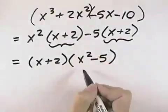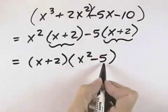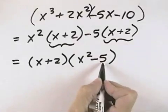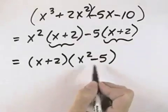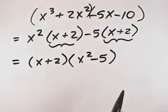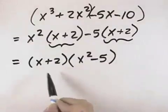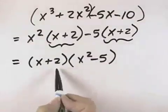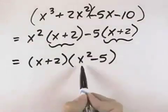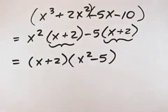Looking at this to see if it will factor further: it's not the difference of squares because 5 is not a perfect square, and it's certainly not cubes. Therefore it will not break down any further. So my final completely factored form is x plus 2 times the quantity x squared minus 5.